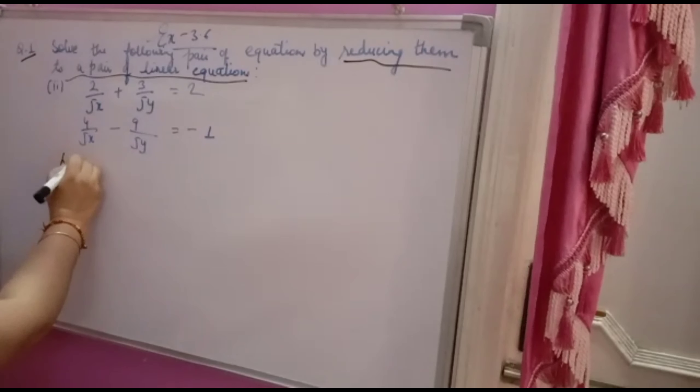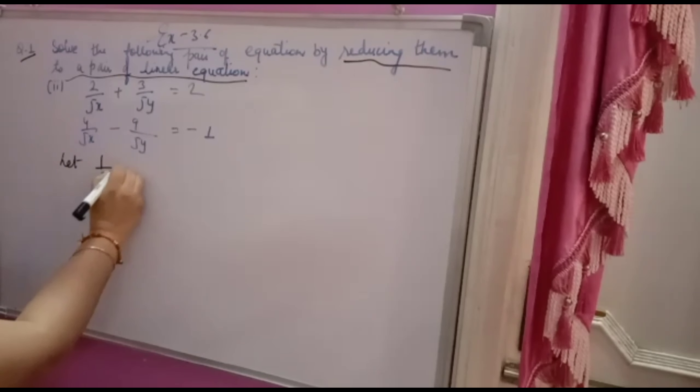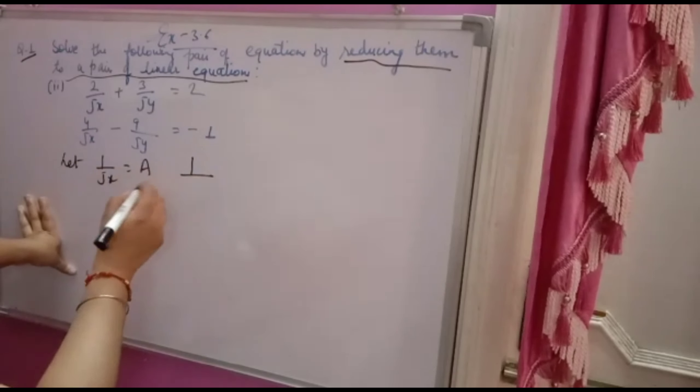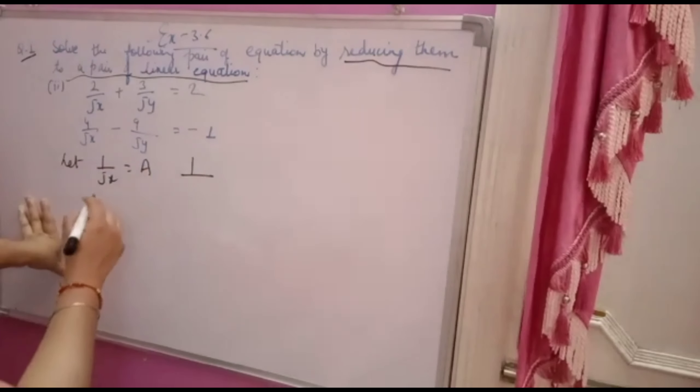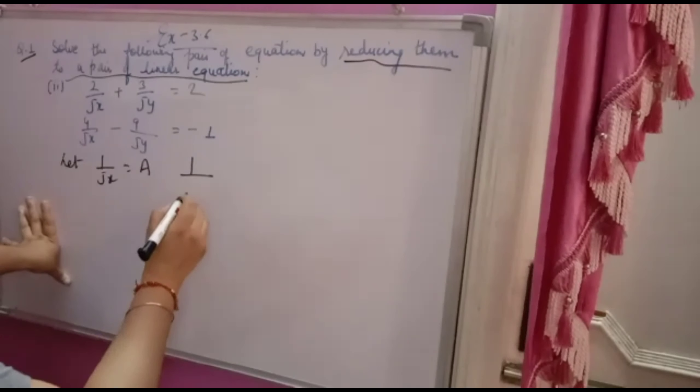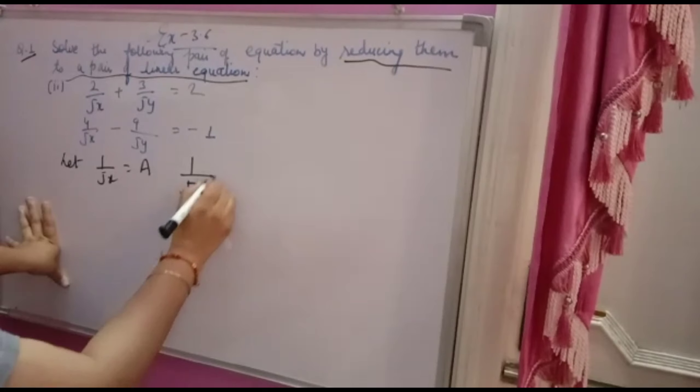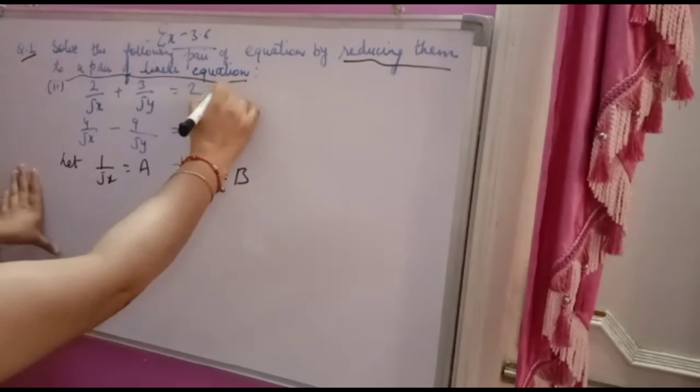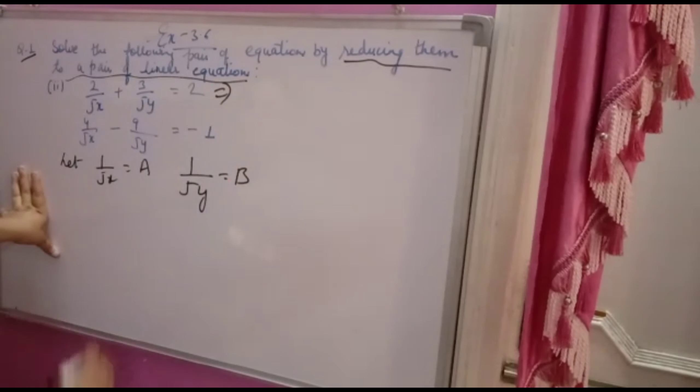Let 1 over root x is equal to k. You can take any variable - P, Q, X, Y, capital X, Y also you can take, and any other variable U, B also you can take. So according to your wish, you can take the variable and put in equation number one.